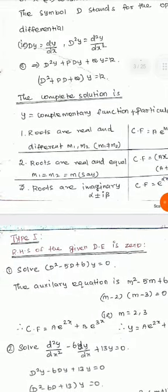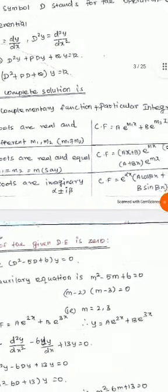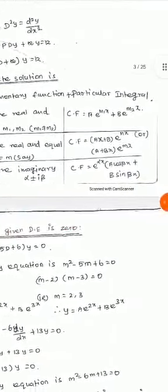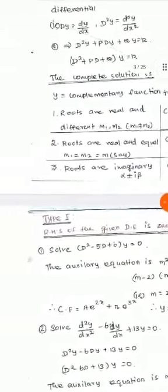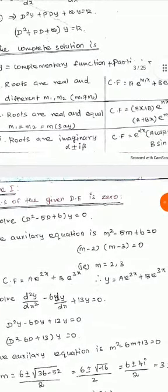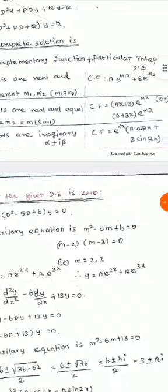Case 2: roots are real and equal, m1 = m2 = m. Then the complementary function is CF = (a + b·x)·e^(m·x). Case 3: roots are imaginary, in the form α ± iβ. Then the complementary function is CF = e^(α·x)·(a·cos(β·x) + b·sin(β·x)).